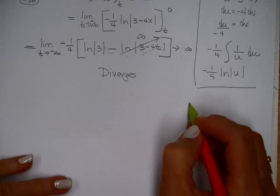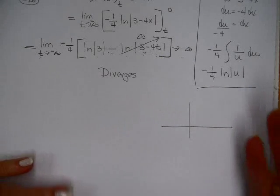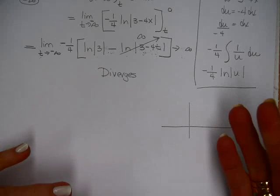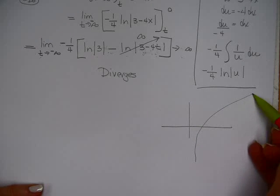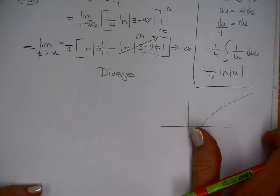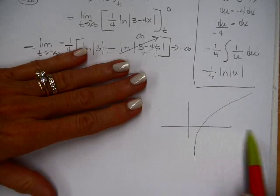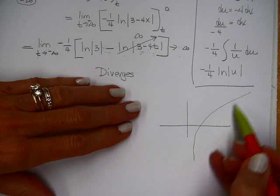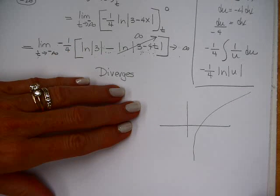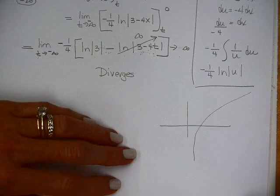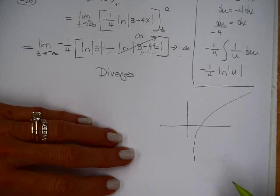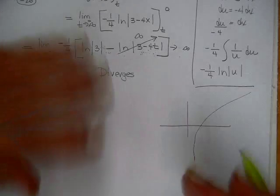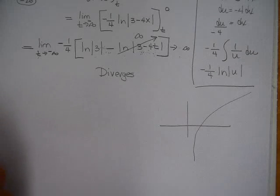It helps to know what the graph of the natural log looks like. The natural log graph goes off in that direction — so if I'm looking at bigger and bigger numbers, these values are getting larger and larger and larger. I just know it gets bigger and bigger.